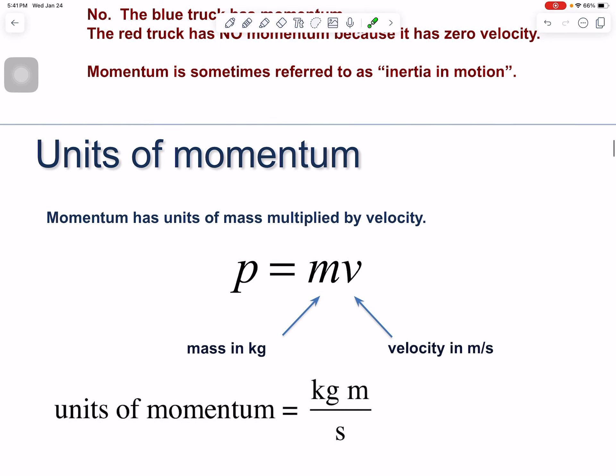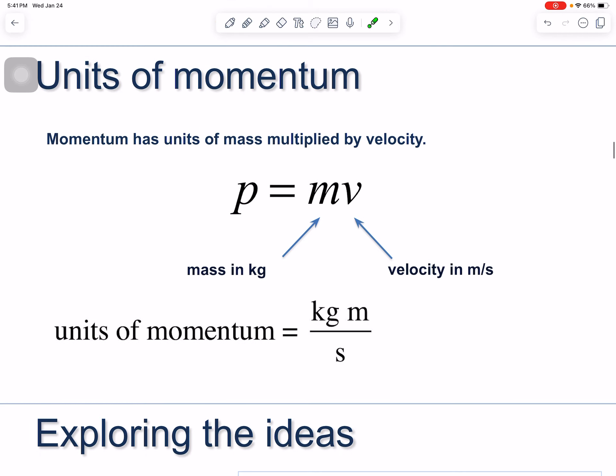The units of momentum don't have a special combined unit name — it is simply kilogram meters per second. That's all it is. Nothing fancy.